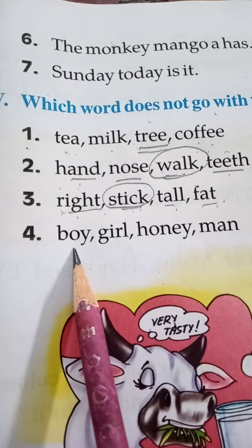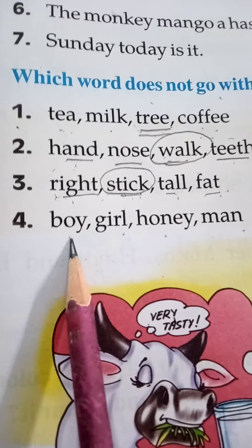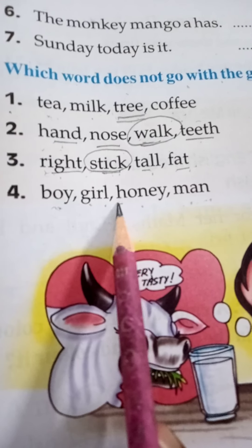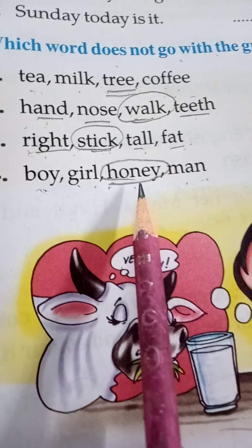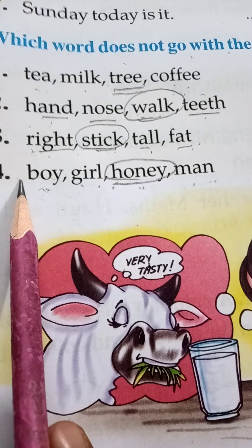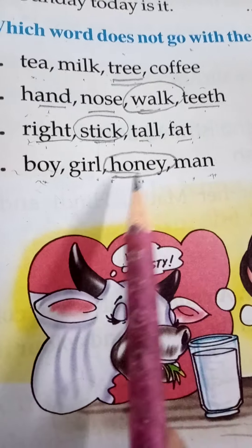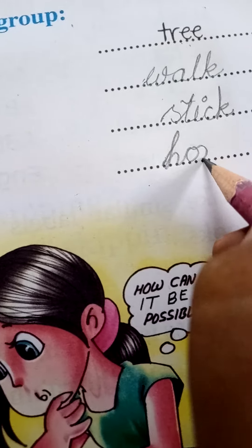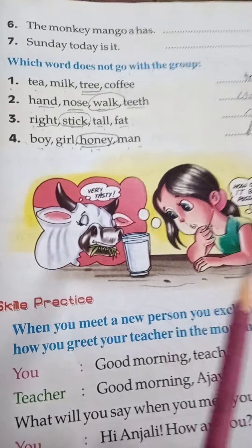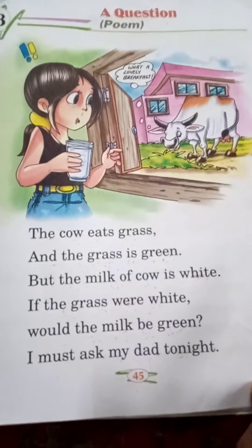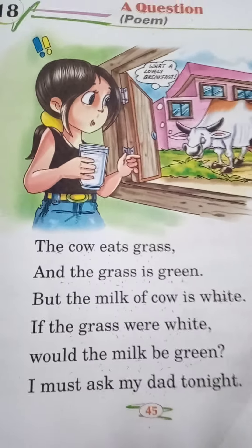And the last one: boy, girl, honey, man — boy, girl, and man are person names, but honey is not a person. Honey is a food. So honey is the different word. Right here: honey. So students, you can do this exercise on the next page.